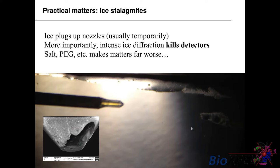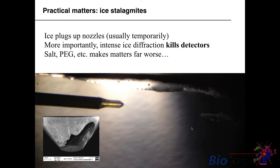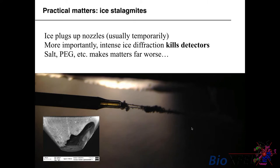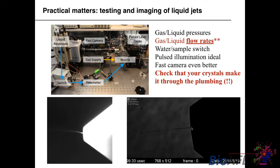On practical matters in running nozzles: icicles can be quite devastating. In the movie you can see a nozzle forming an icicle — like a stalagmite growing back. The problem is it plugs up the nozzle, and more annoyingly the ice diffracts like crazy and can kill detector pixels. It's even worse if it's not pure water — if you have salt, PEG, and other things in your buffer. This results from not designing an adequate catcher for the liquid.